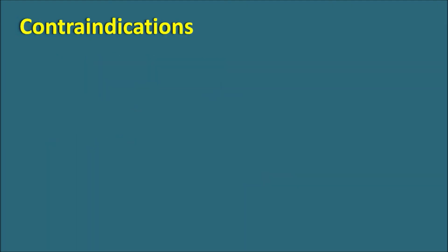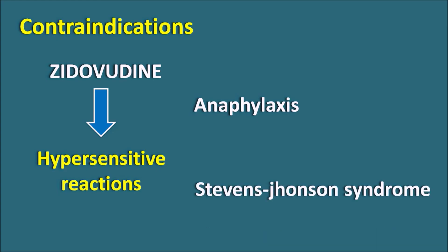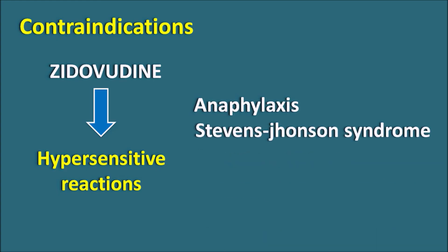What are the contraindications? Zidovudine can produce hypersensitive reactions. Sometimes it can produce severe anaphylaxis as well as Stevens-Johnson syndrome, which is a fatal hypersensitive reaction. In such conditions, Zidovudine is contraindicated.